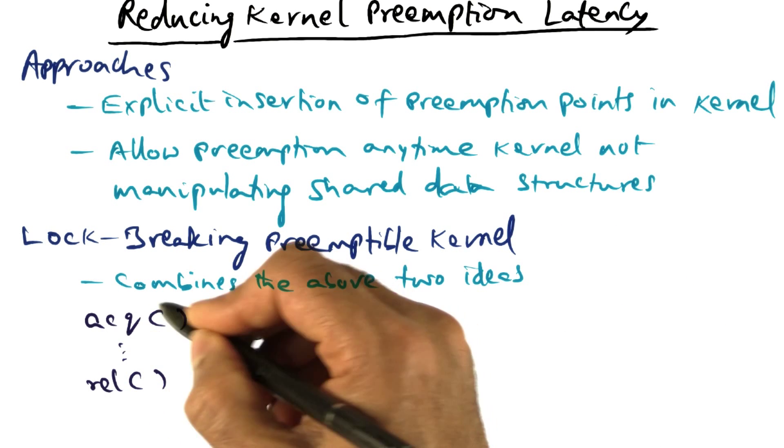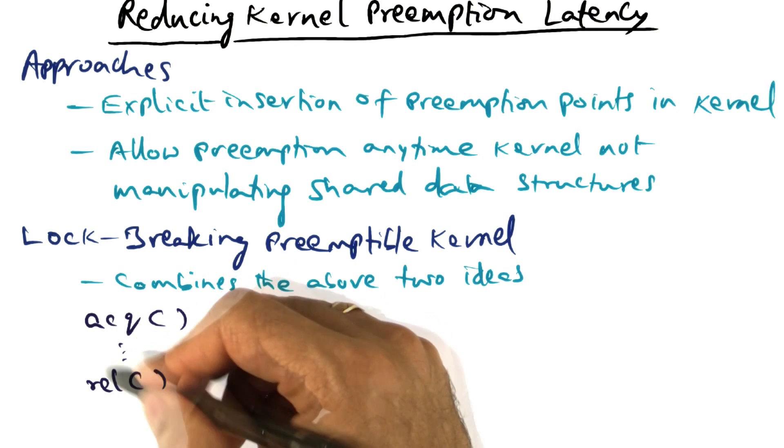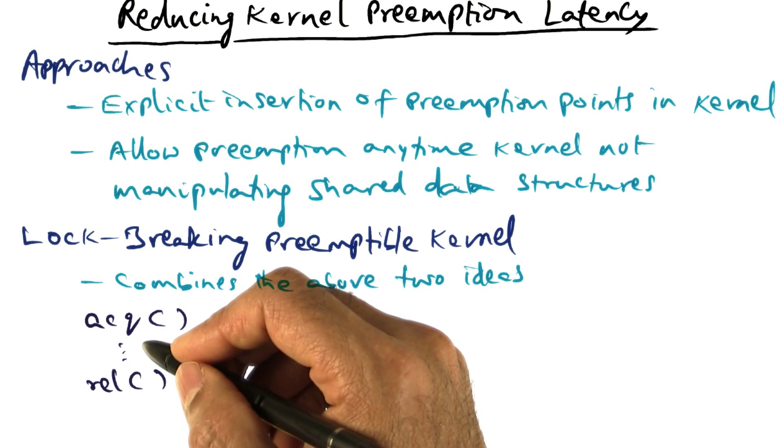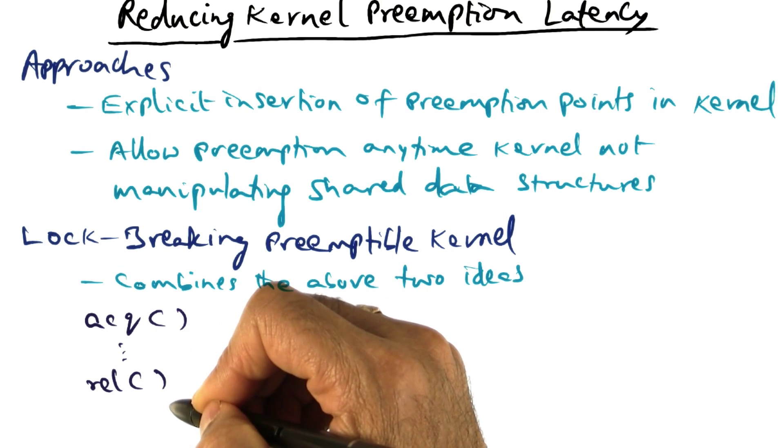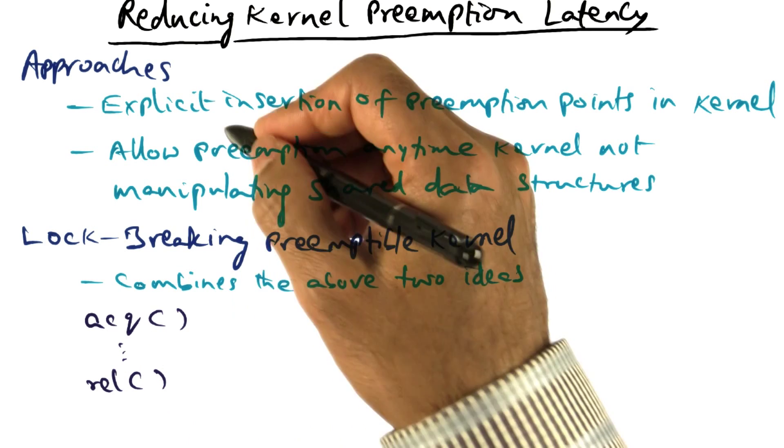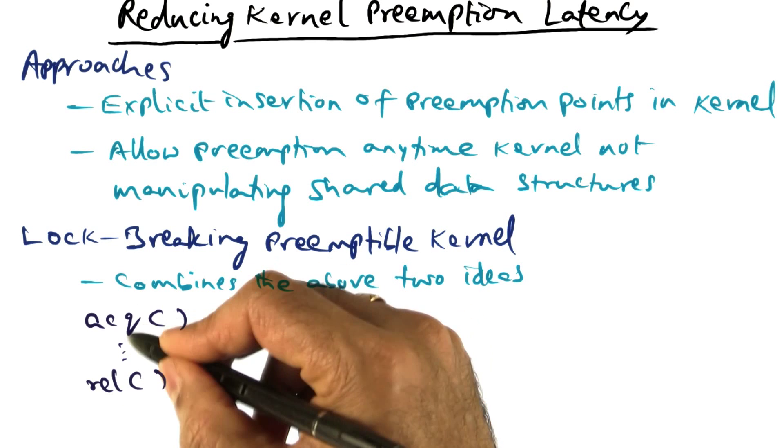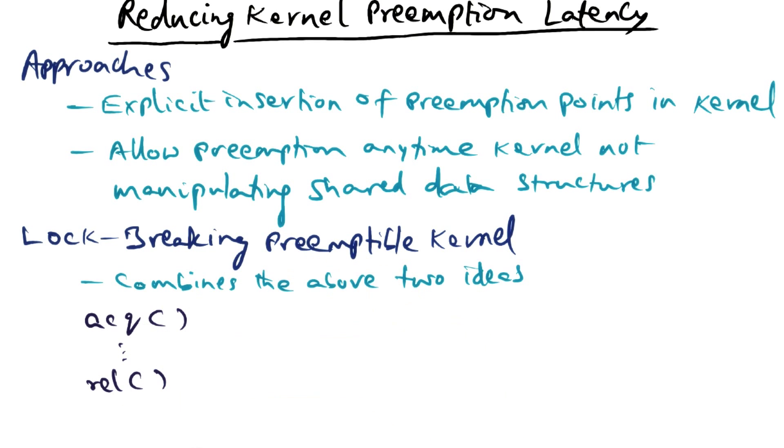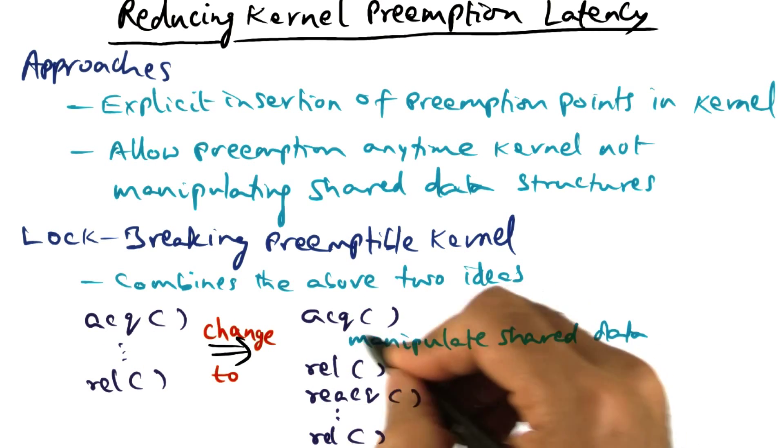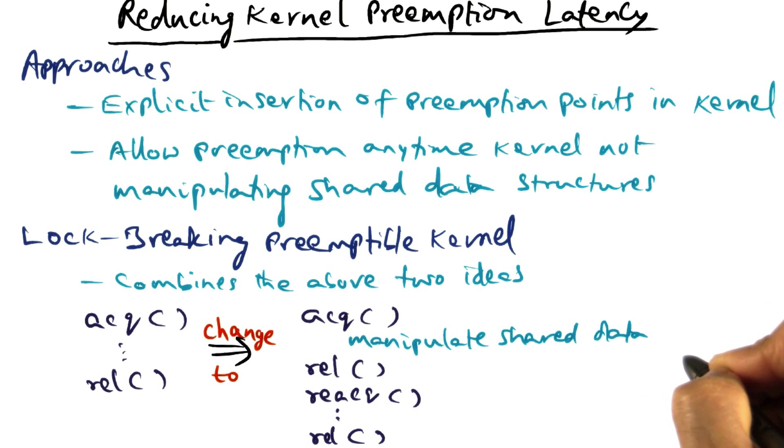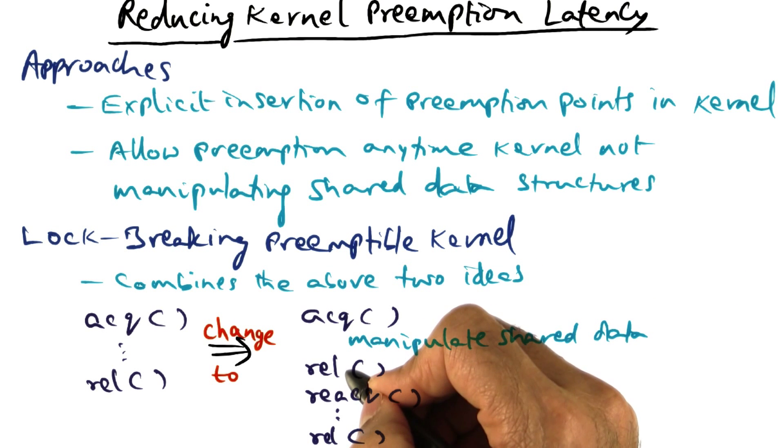The idea is the following. There may be a long critical section in the kernel wherein it is manipulating some shared data structures, but it is also doing other things within this critical section. So what we're going to do is apply these two principles and break this long critical section as follows. We're going to change this critical section code into two sections. You acquire the lock, you manipulate the shared data structures, and you release the lock.